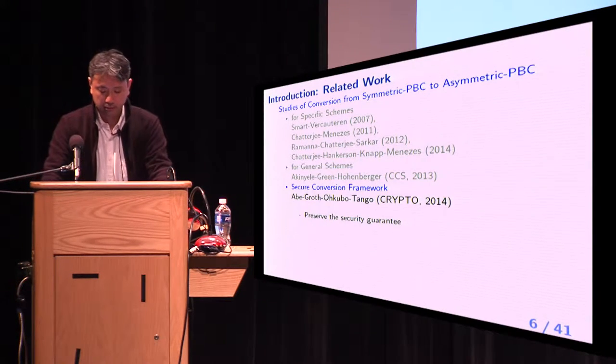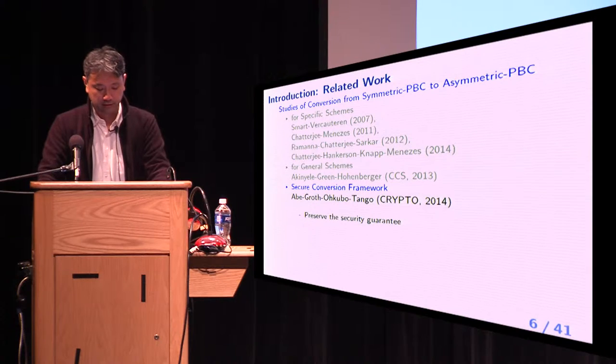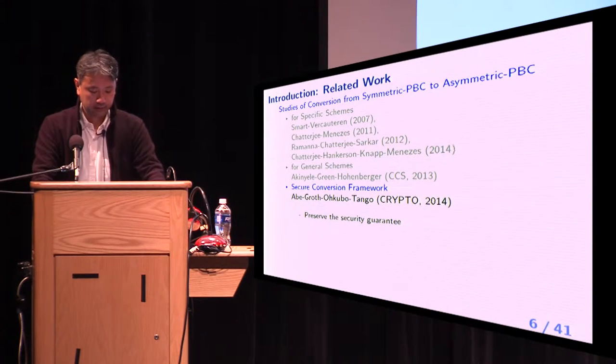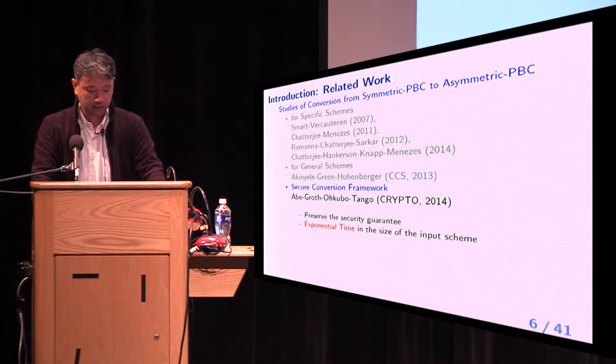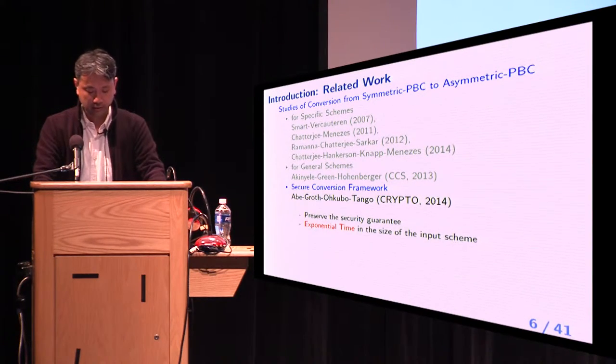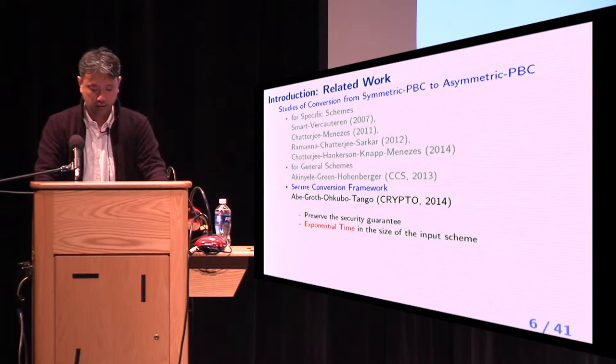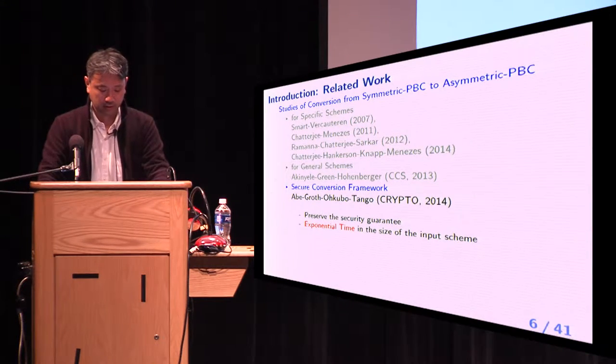At Crypto 2014, Abe et al. proposed a secure conversion framework. Their conversion preserves the security guarantee, but it runs in exponential time in the size of the input scheme. It is infeasible, even for a small-scale scheme.